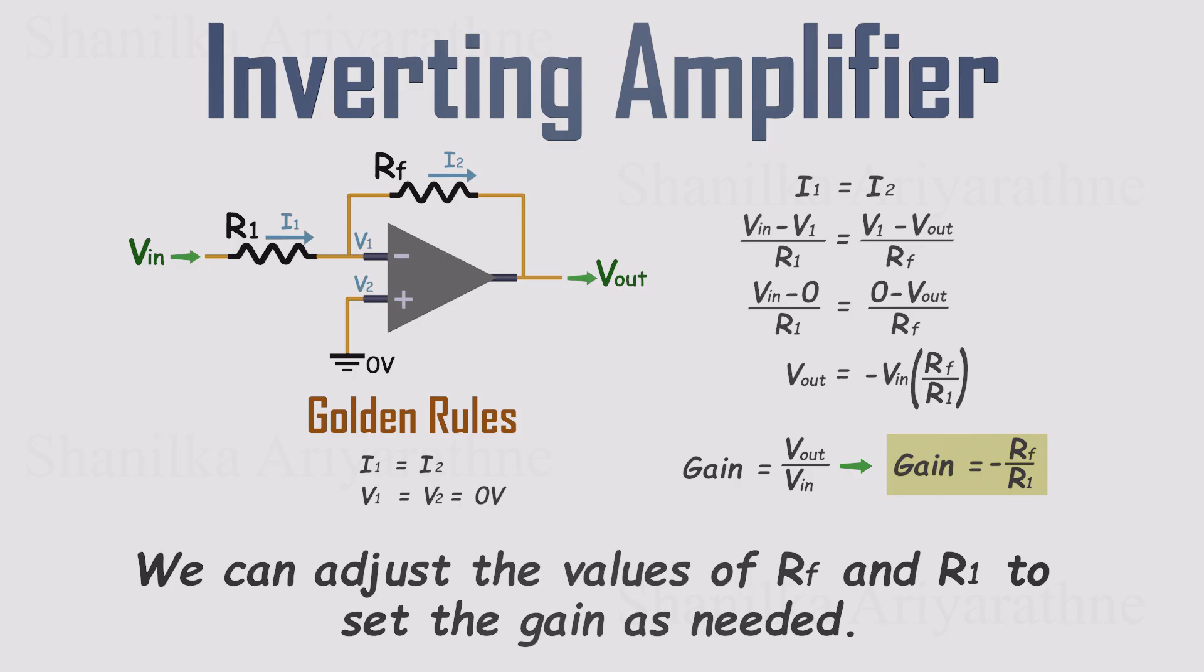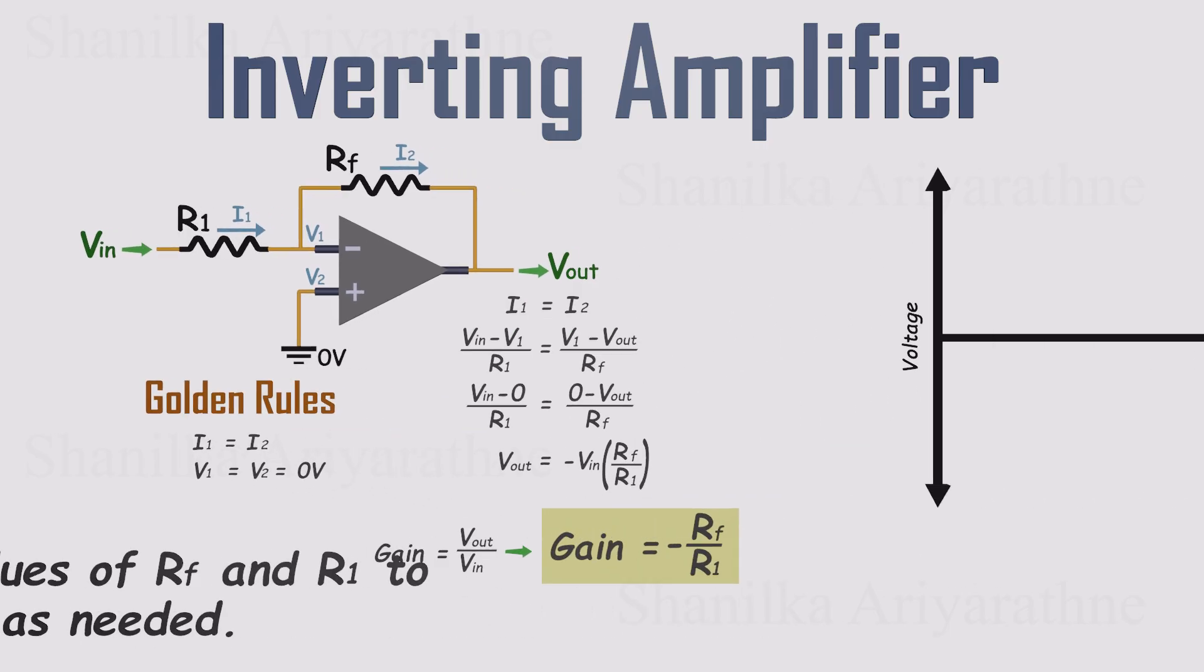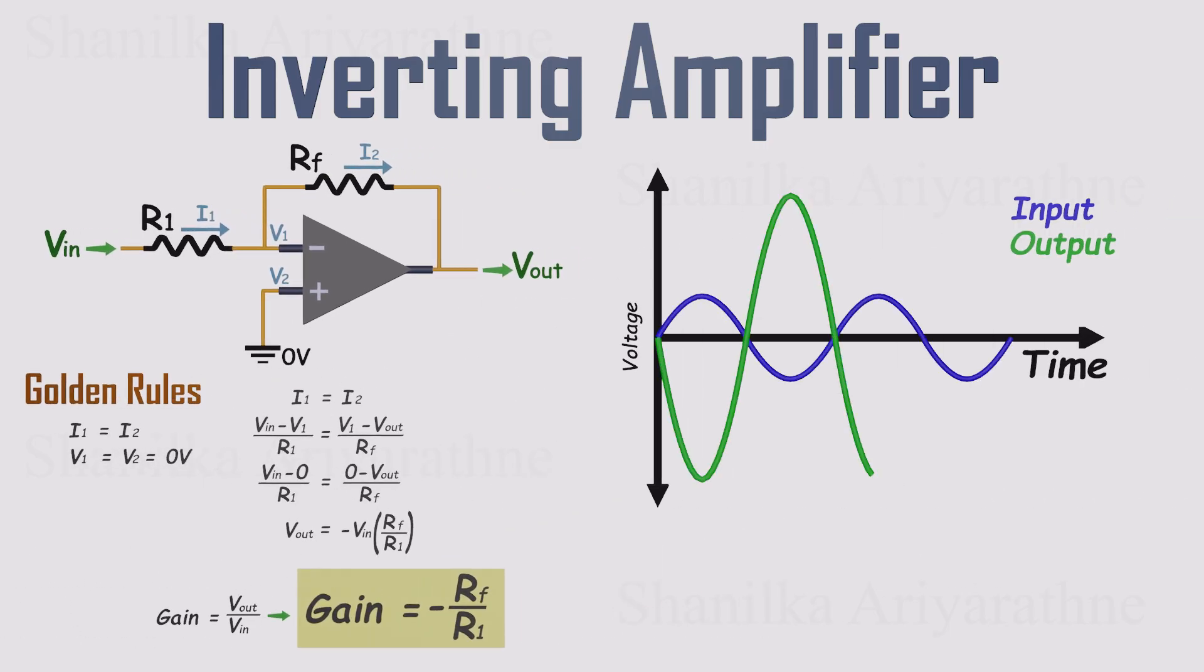Now, the negative sign is really important. If the input is a sine wave, the output is still a sine wave, but flipped upside down and scaled by the gain. In other words, the output is inverted compared to the input. You can see this clearly on a voltage versus time graph. And this inversion isn't a drawback, it's actually very useful.